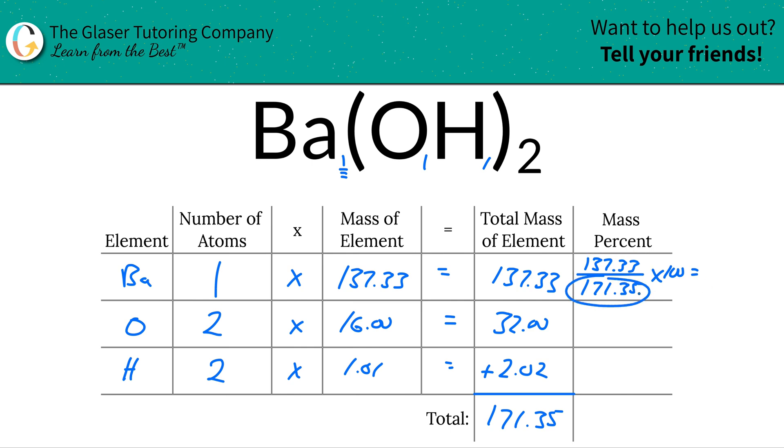It's just the mass of barium divided by the mass of the compound. That's it. Hence why we need to find the mass of the compound first. So we'll take that 137.33 divided by 171.35, and we come up with a percentage here of about 80.15 percent. So that's now the percent composition of barium.